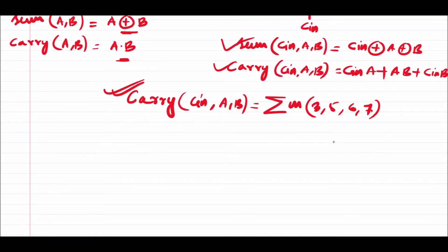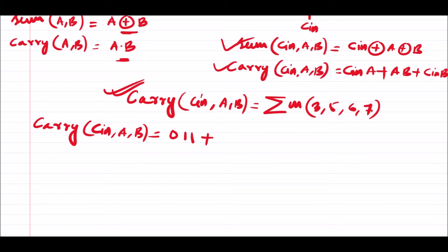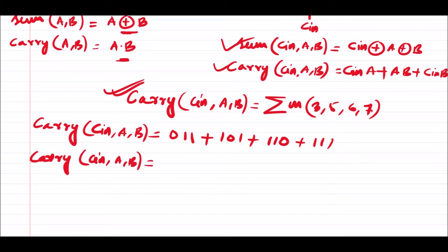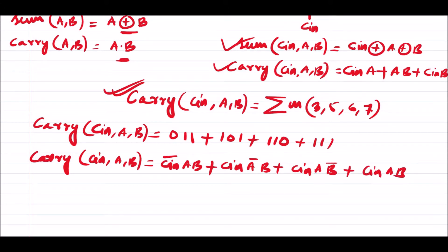Now let us write down this equation in canonical form in terms of variables. The carry equation C(Cin, A, B) expands to: Cin_complement·A·B + Cin·A_complement·B + Cin·A·B_complement + Cin·A·B. This is completely in canonical form because all variables are present in each term.